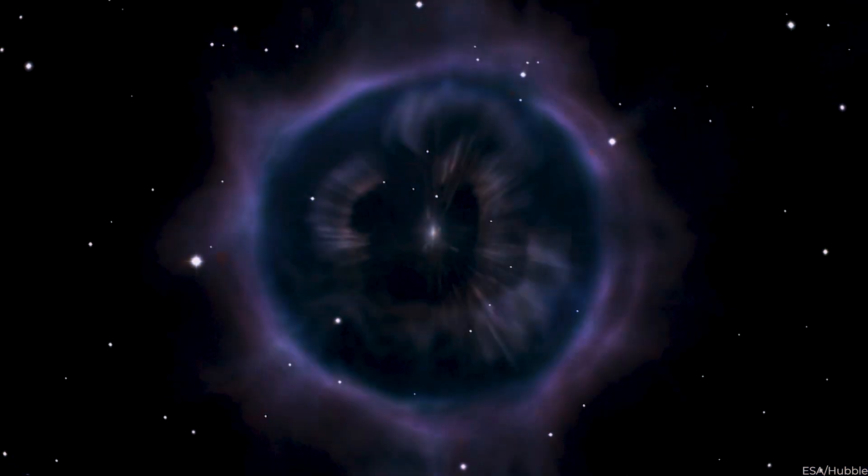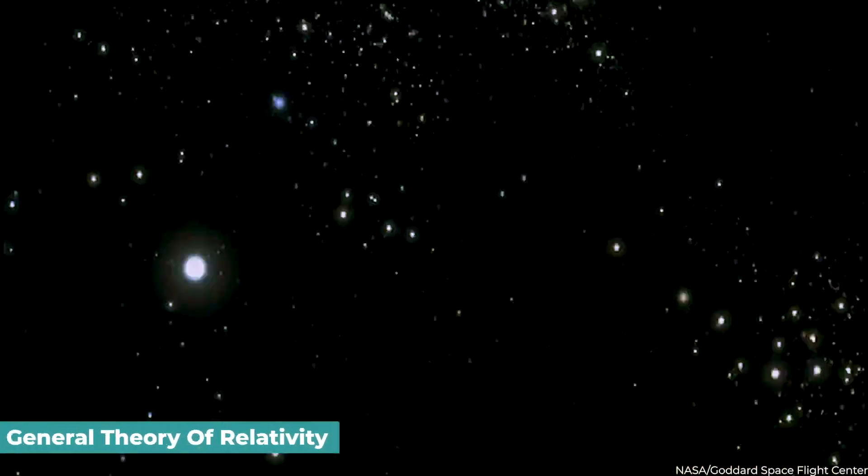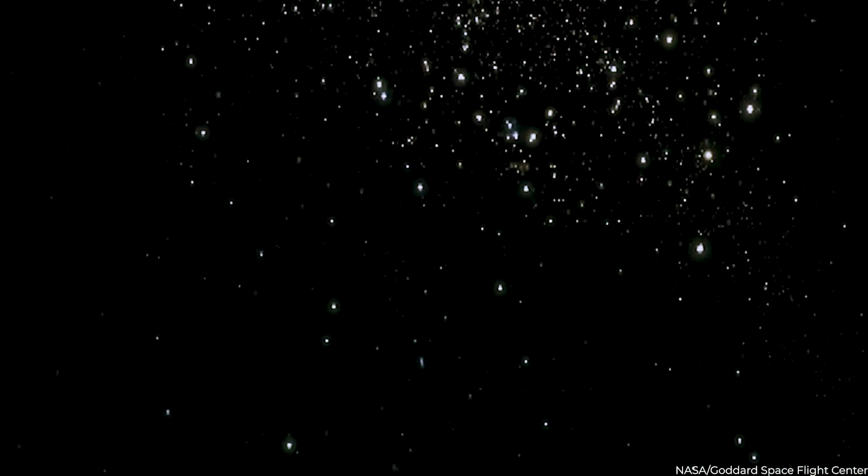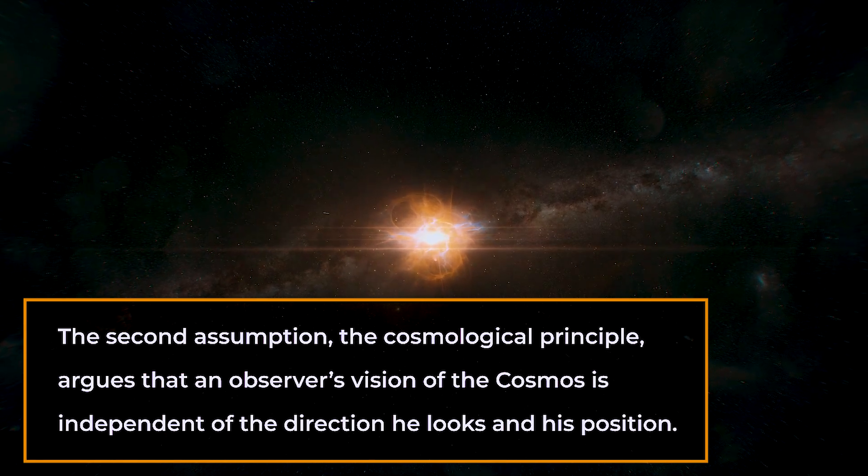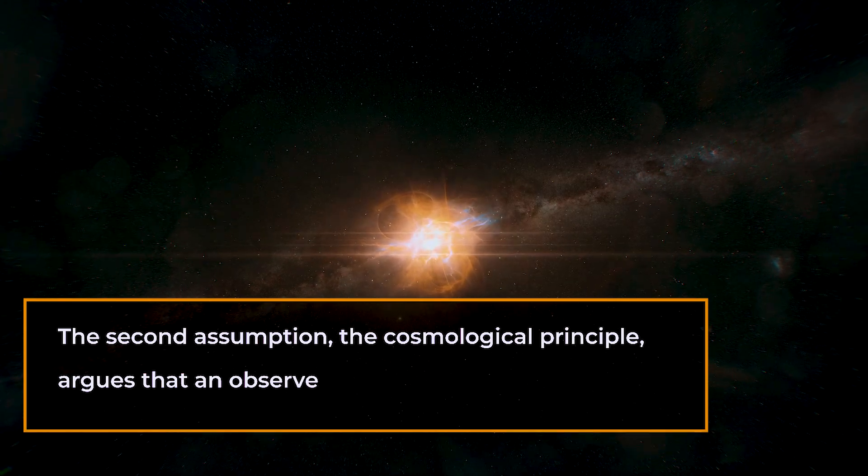Two assumptions underpin the Big Bang theory. The first is that Albert Einstein's general theory of relativity accurately explains all matter's gravitational interaction. The second assumption, the cosmological principle, argues that an observer's vision of the cosmos is independent of the direction he looks and his position.